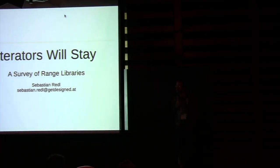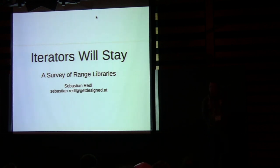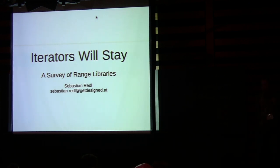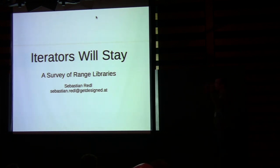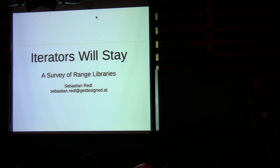Good morning, my name is Sebastian and I'm doing a talk about range libraries. If you check the program, you will see that my talk is called 'iterators may stay,' but I changed it — I'm saying iterators will stay, and I know this is a bold statement. If you want to argue it, please do. I want there to be a lot of discussion during this talk. I'm making some more or less unsubstantiated claims, please argue with me.